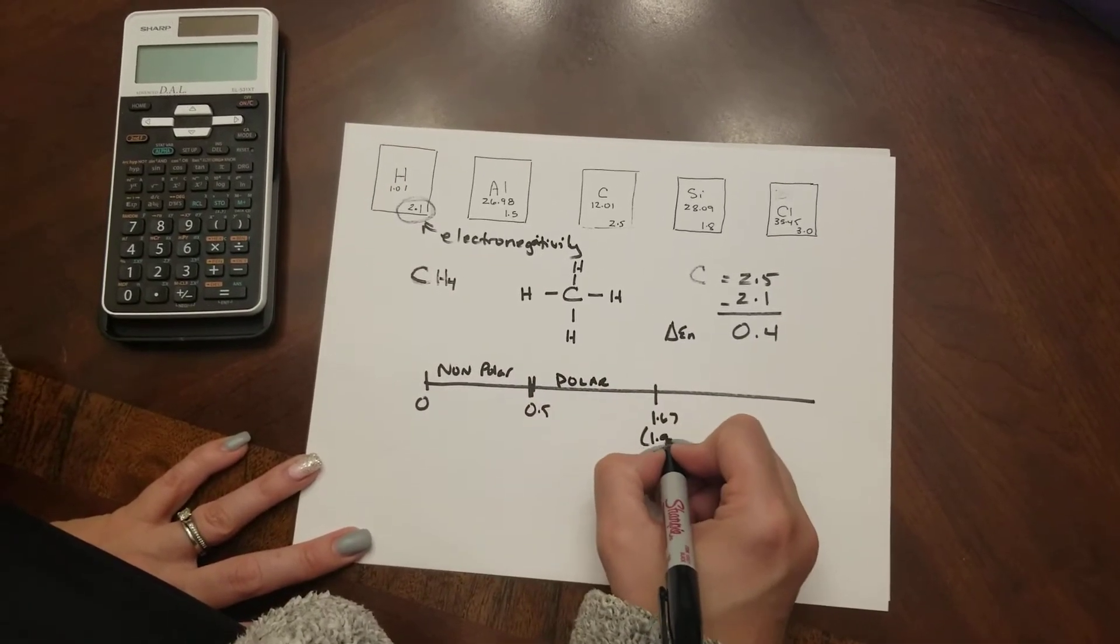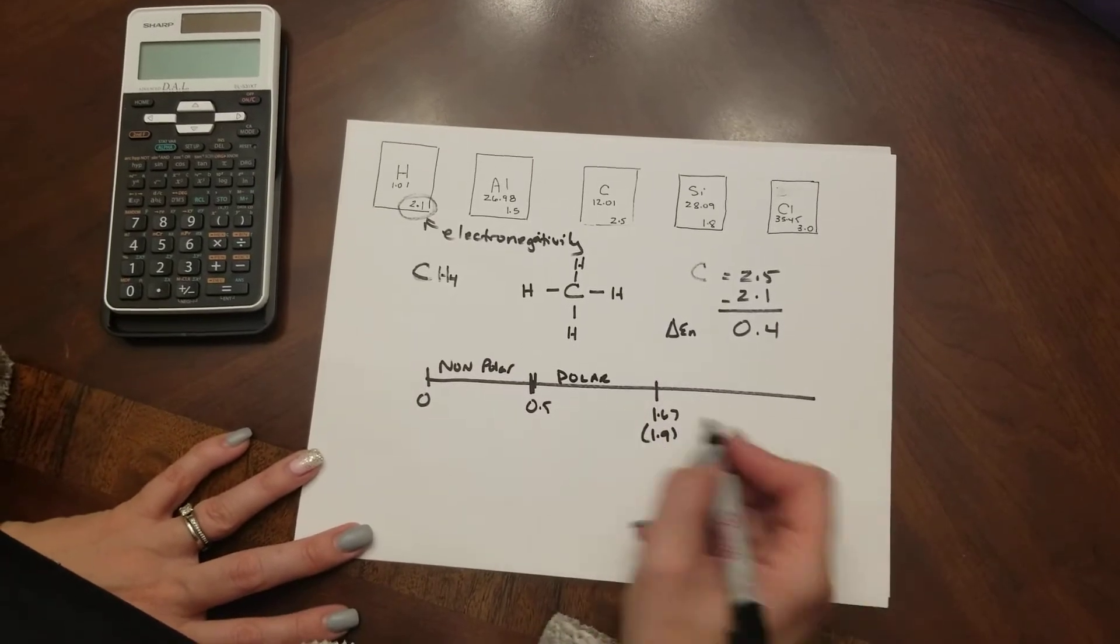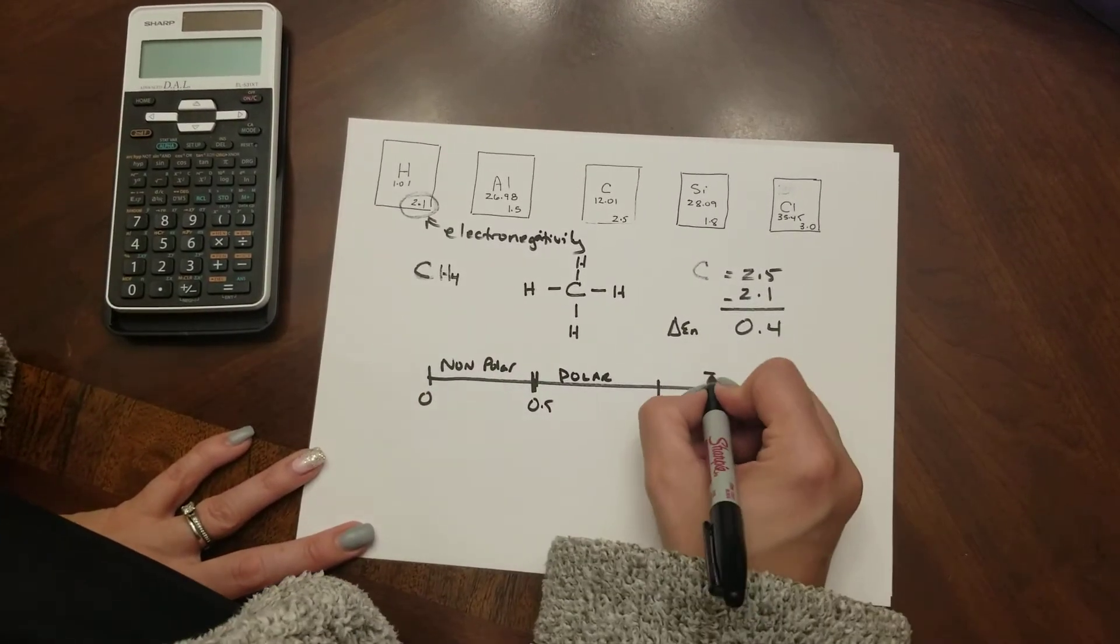Several textbooks are going to use the number 1.9 as the tipping point because anything around here and up is ionic.